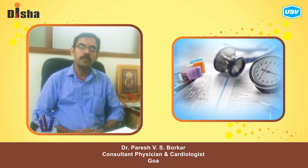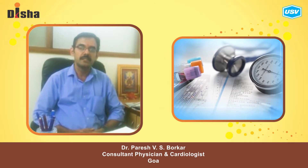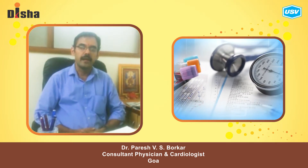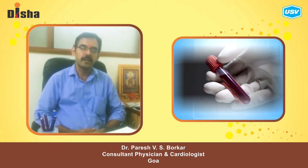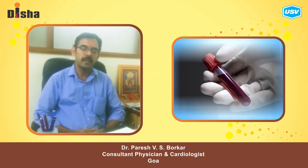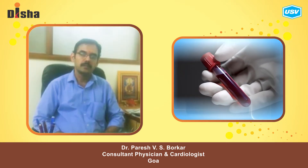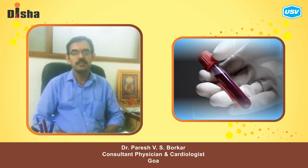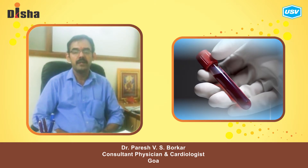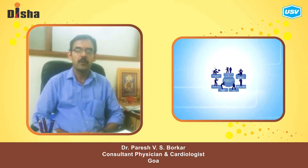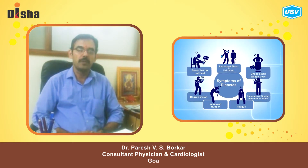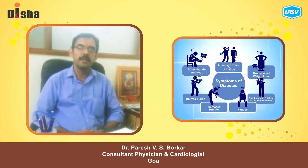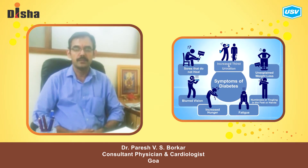Sometimes patients come for routine OPD visits who are asymptomatic and sugar is detected high during routine blood tests. Sometimes patients can have complications related to diabetes, like eye problems and nerve problems, and can present with blurring of vision or numbness of the legs.